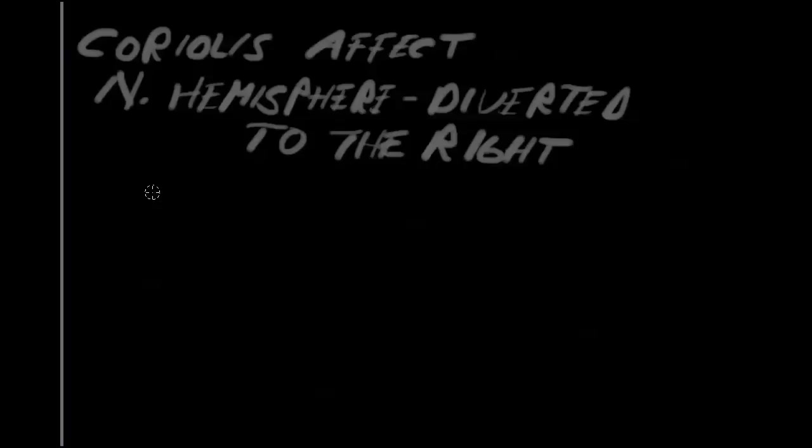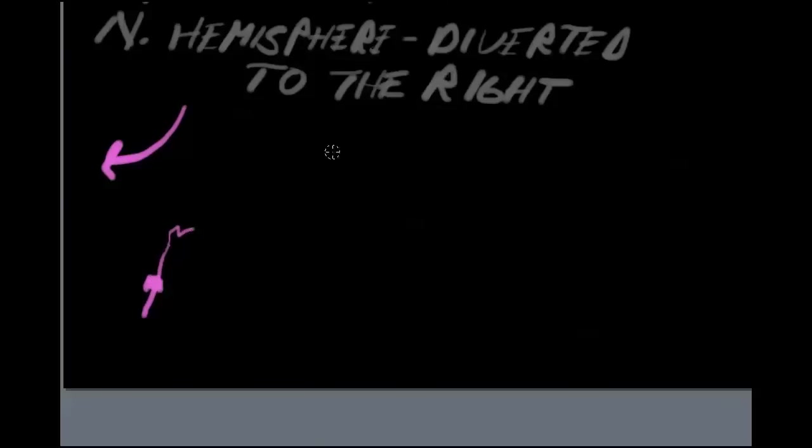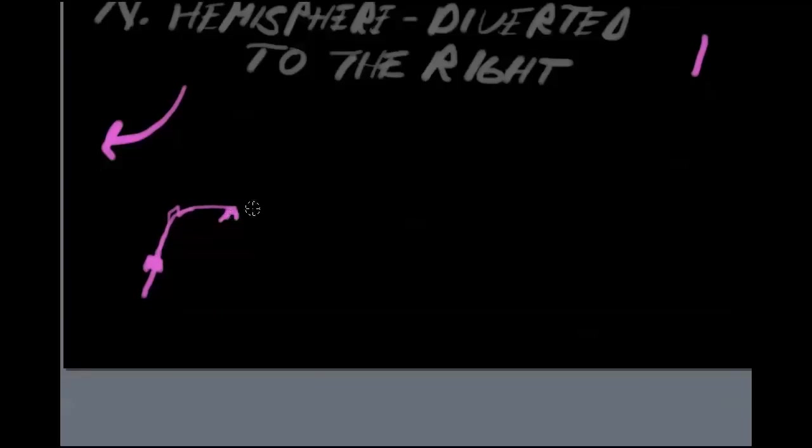But what this is saying, if something's flowing from the north, let's see if we can get a different color here. Let's say a wind's moving from the north, it's going to be shifted to the right. If it's flowing out of the south, whoops, get that back in there. If it's flowing out of the south, it's shifted. If it's flowing to the south, let's see if we can get this back in here. It's going to shift to the right. And if it's flowing from the east, it's going to get shifted to the right. And if it's flowing from the west, it's going to get shifted to the right.